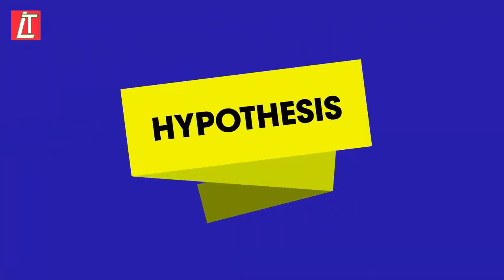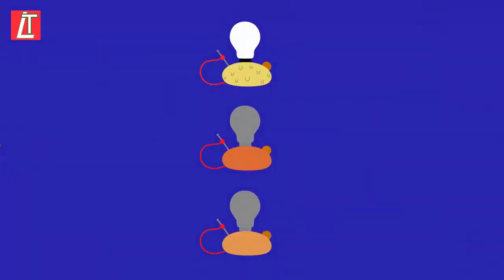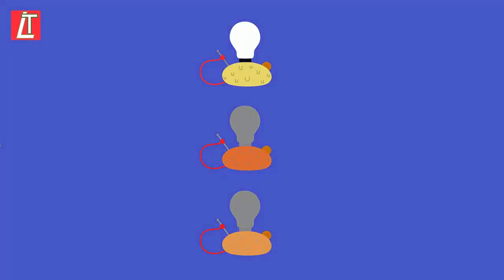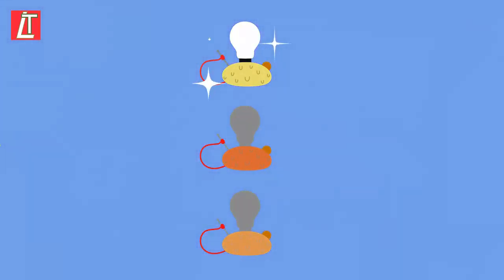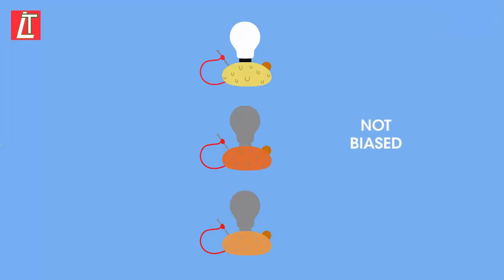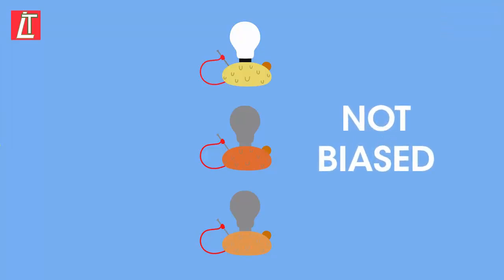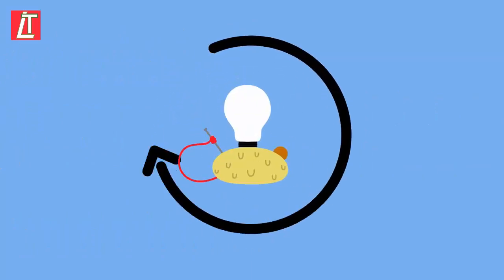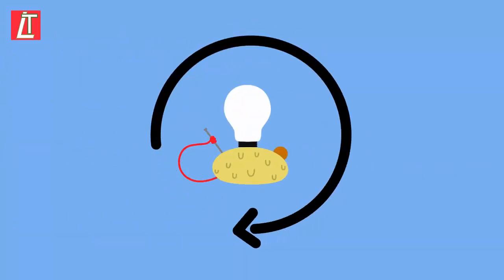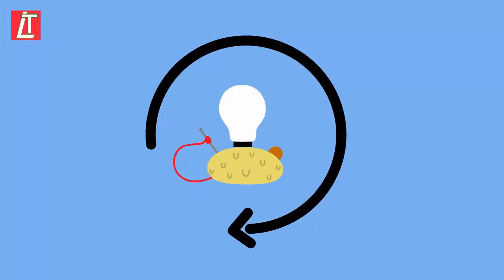Any investigation usually starts with a hypothesis. The variables have to be identified and ways found to control all the variables, except for the variable that is being tested. This goes some way to ensuring that the investigation is not biased. Then the experiment is performed. It may be repeated numerous times in order to increase reliability.